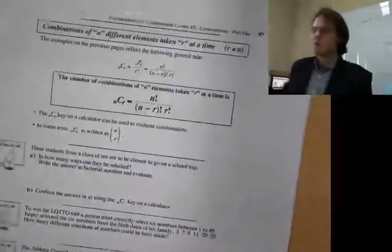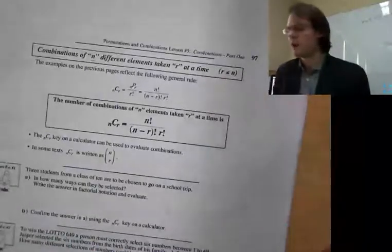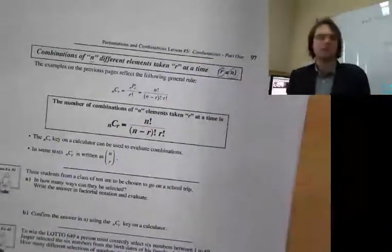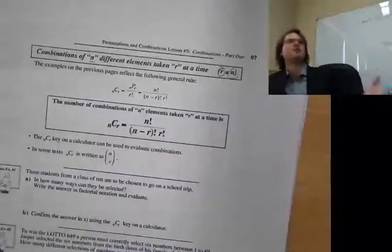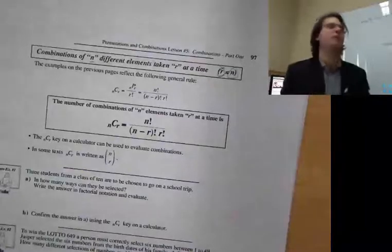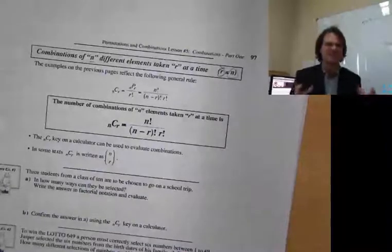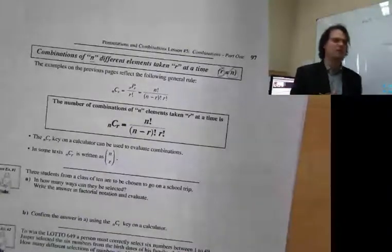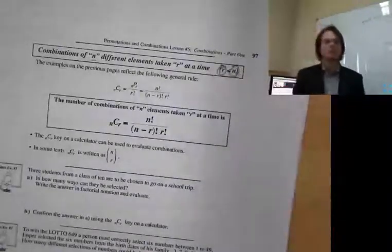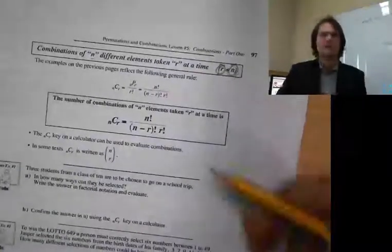The combination of n different elements taken r at a time. r must always be less than n, just like in permutation, because it doesn't make sense otherwise. If you only have five students and you want to select seven to go rafting, that just does not add up. So r is how many you're selecting, and n is your total population.